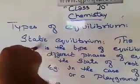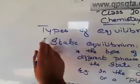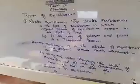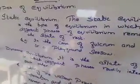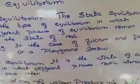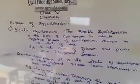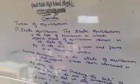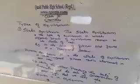First we will study static equilibrium. So what is static equilibrium? Static equilibrium is a type of equilibrium in which the different phases of equilibrium remain in a state of rest. Everything remains in the same rest position — the position does not change. Static equilibrium is the position in which no changes can ever occur.